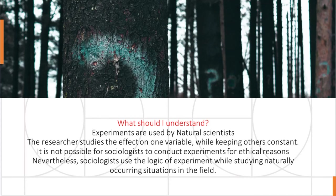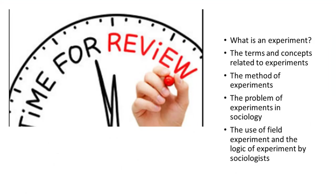What should you understand about experiment and its use by sociologists? Experiments are used by natural scientists — the researcher studies the effect of one variable while keeping others constant. It is not possible for sociologists to conduct experiments for ethical reasons. Nevertheless, sociologists use the logic of experiment while studying naturally occurring situations in the field. We looked at: what is an experiment, the terms and concepts related to experiments, the method of experiments, the problem of experiments in sociology, and the use of field experiment and the logic of experiment by sociologists.